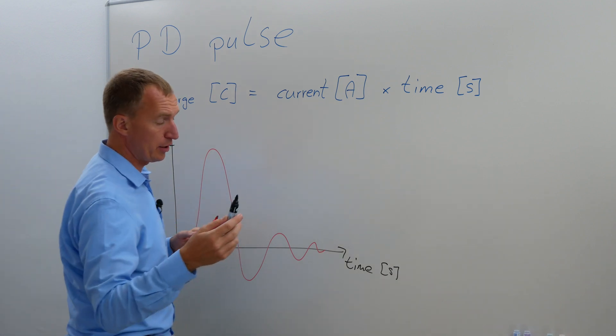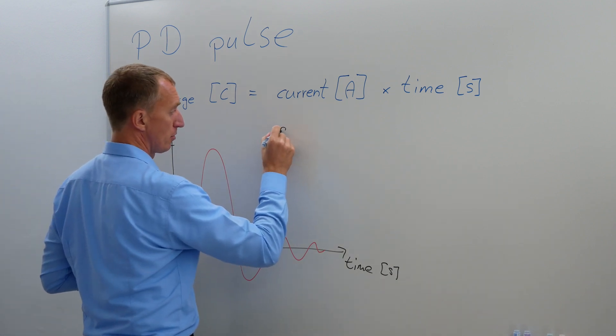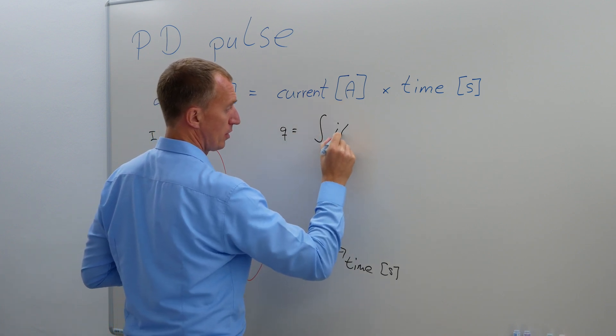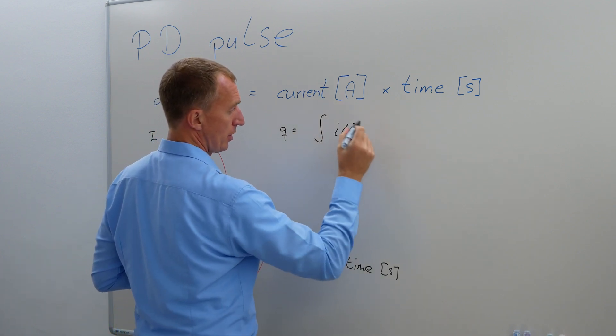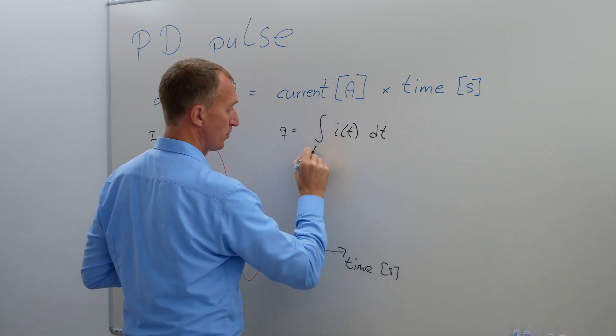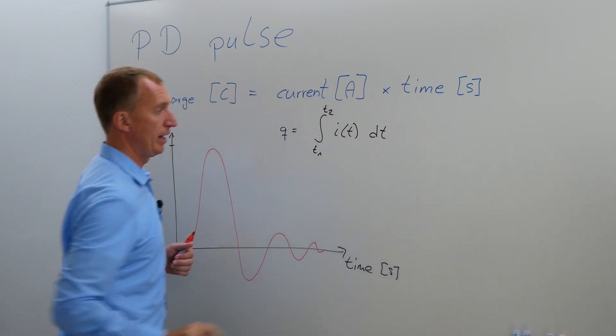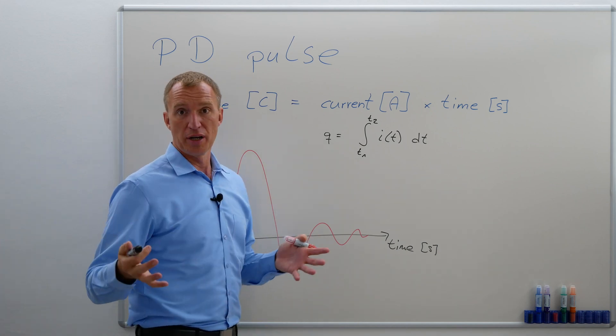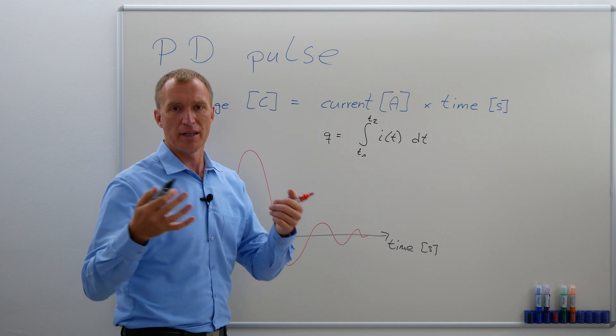So how do we measure the charge or how we calculate the charge? Charge Q is the integral of current that is changing over time. So obviously it's time 1 and time 2. And as we know, it is kind of hard to measure a current in our world. It's rather complicated.